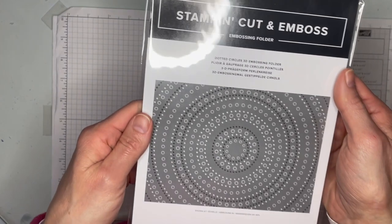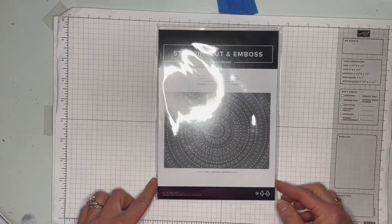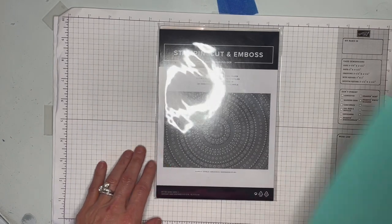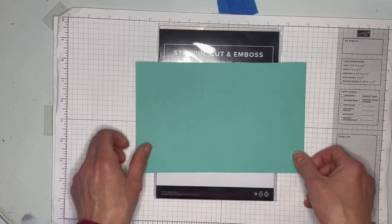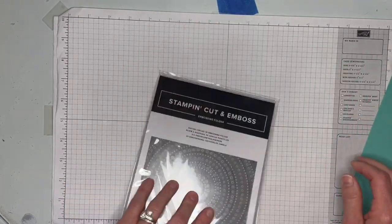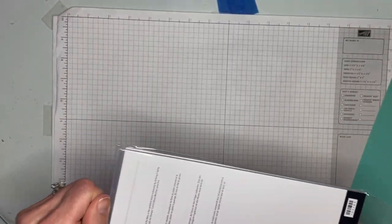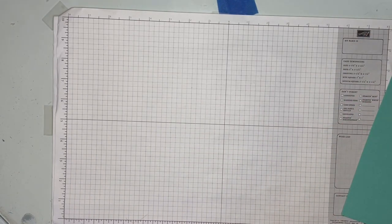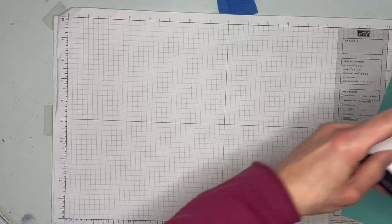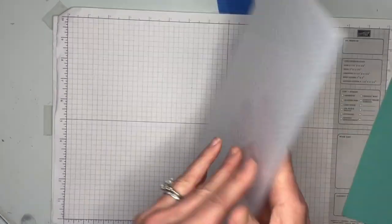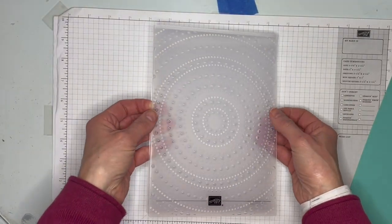The dotted circles 3D embossing folder. Look at how big this is. This is like an A2 card front size and it is nearly the same size. So we've got to take this one out and see. Look at that. It's so big. Hold it down there. So you get the full effect. It's huge. It is six by eight and a half.